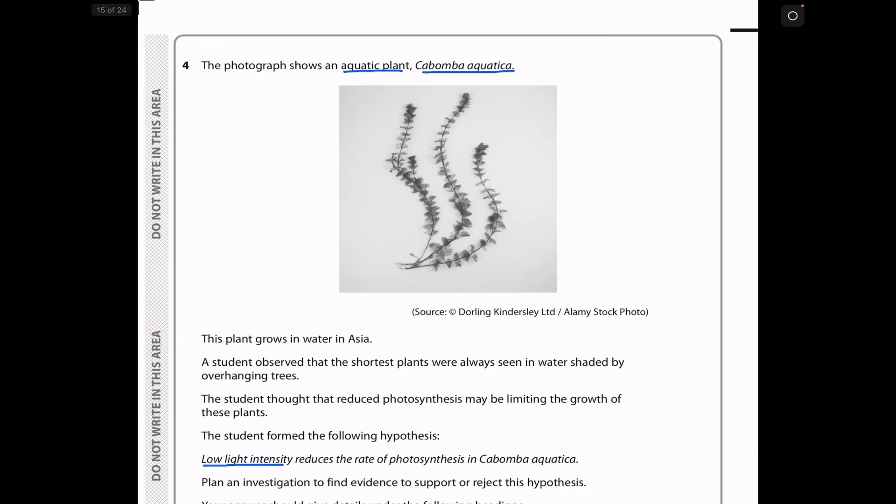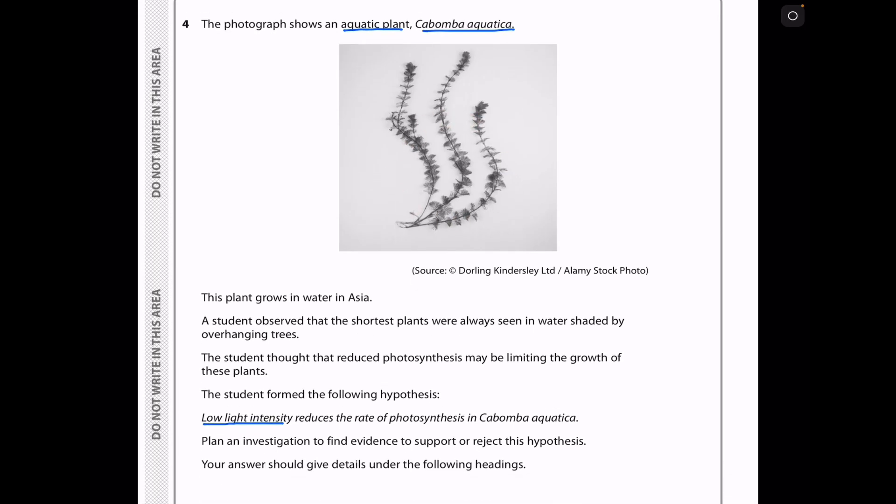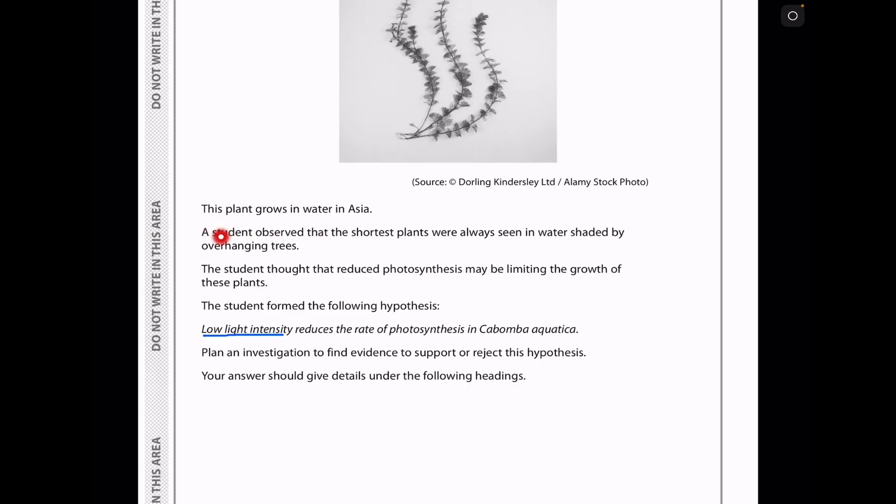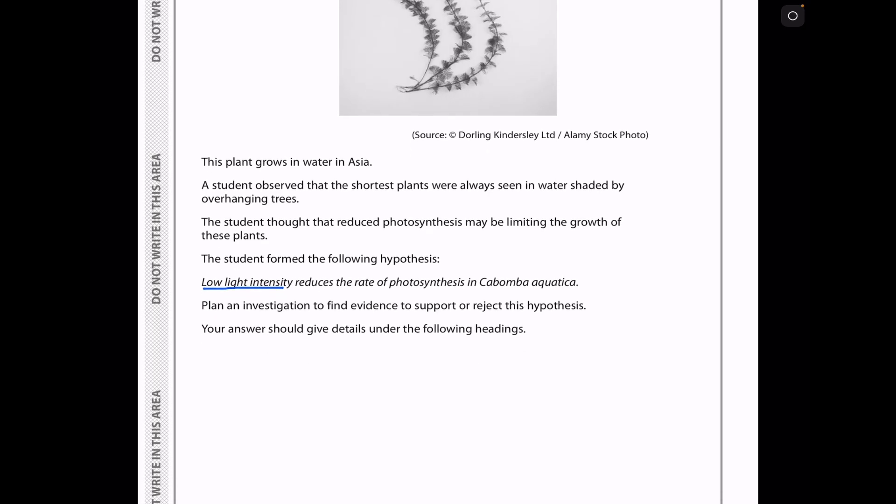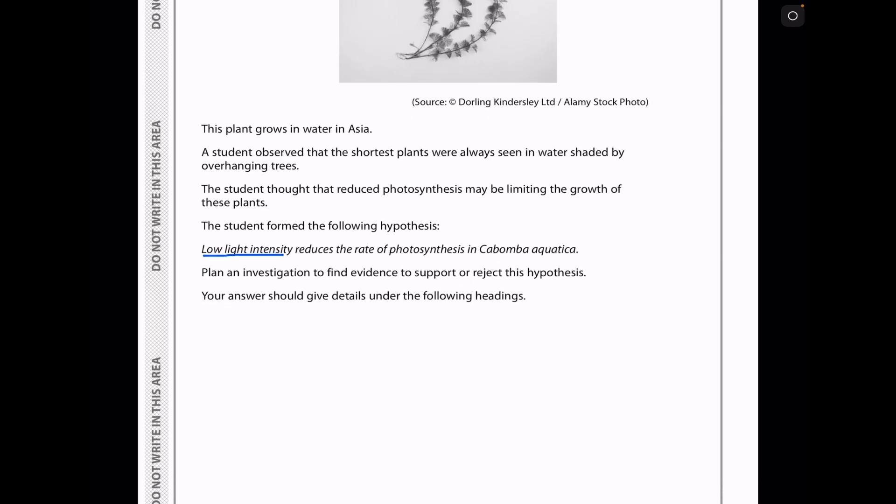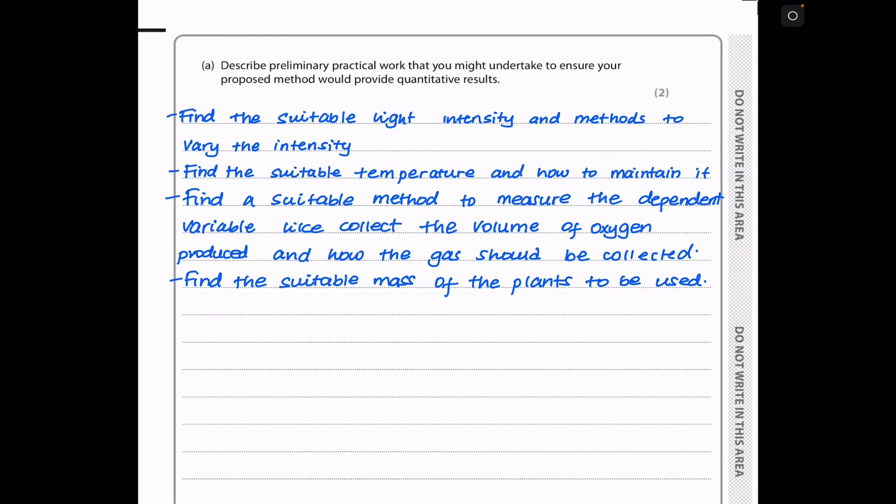Let's continue to question 4. Question 4. The photograph shows an aquatic plant, Cabomba aquatica, which is this one here. They say this plant grows in water in Asia. A student observed that the shortest plants were always seen in water shaded by overhanging trees. A student thought that reduced photosynthesis may be limiting growth of these plants. The student formed the following hypothesis: Low light intensity reduces the rate of photosynthesis in Cabomba aquatica. They want you to plan an investigation to find the evidence to support or reject this hypothesis. And in your answer, you should give details under the following headings.